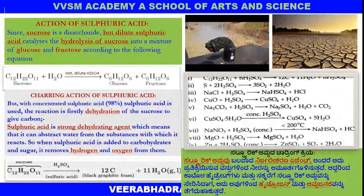Let us discuss the action of sulfuric acid on sucrose, a disaccharide. Sucrose undergoes hot and dilute sulfuric acid — acid hydrolysis — giving one molecule of glucose and one molecule of fructose. That is the reaction with hot and dilute sulfuric acid.